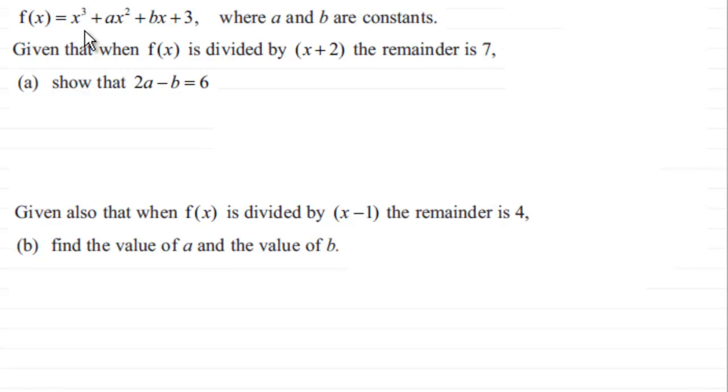Given that when f of x is divided by x plus 2 the remainder is 7, we've got to show that 2a minus b equals 6.